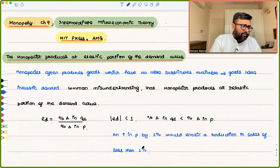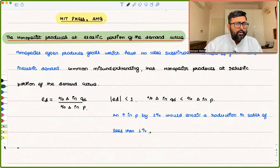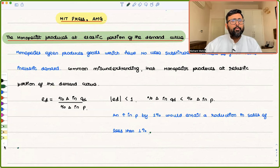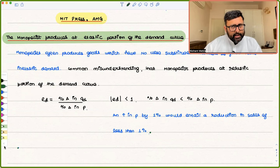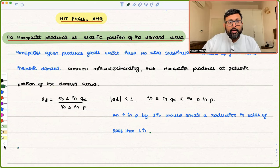An increase in price by 1% would entail a reduction in sales of less than 1%. Don't you think that if I were the monopolist, I have an incentive to actually increase the price, because it is not reducing my quantity demanded much? What is the easiest way to increase revenue? If your quantity is not reducing much, you just increase the price and you're getting more revenue. So why would I stop at the inelastic portion? By increasing the price, my quantity demanded is not reducing much, and ultimately my revenue is increasing.